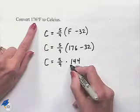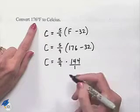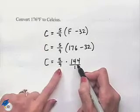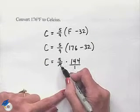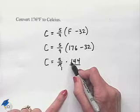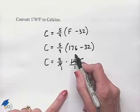We can think of the 144 as being divided by 1. We now can see a common factor of 9 between the numerator and denominator. 9 into 9 goes once. 9 into 144 goes 16 times.